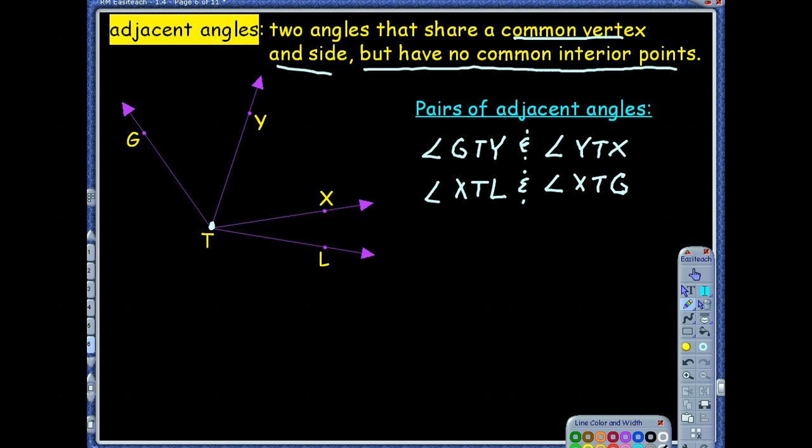And notice she's not naming XTY, which would work as well. She's naming a larger, looks like an obtuse angle. Why not angle XTG? So that angle right there, would that be adjacent to angle YTG? Good question.